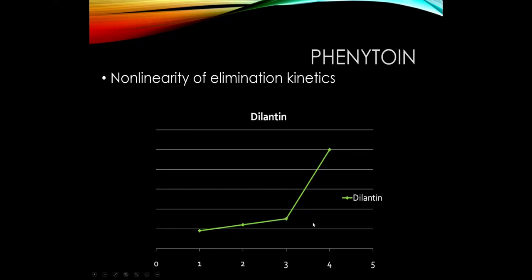For example, a patient on 300 mg has a blood level that's too low. You increase the dose to 400 mg thinking that's not too much of an increase, but the patient becomes toxic over time. Whenever we make a change in the dose of phenytoin, it's very important to follow up and check a blood level relatively soon, because you don't know when that point of saturation will occur. We must carefully follow blood levels because of this non-linearity of elimination kinetics.